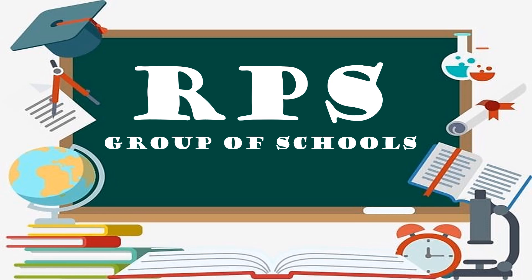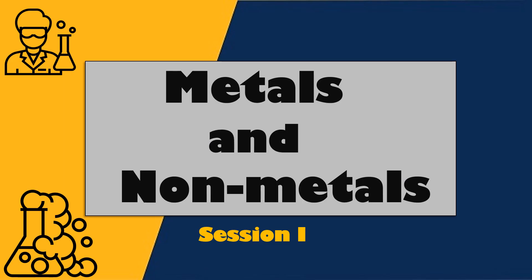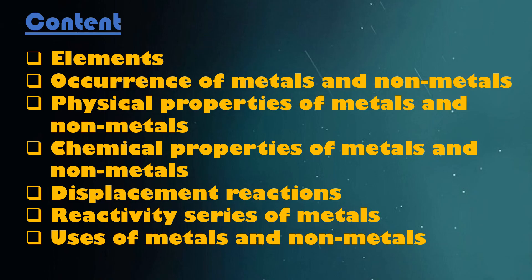Welcome to RPS Group of Schools online classes. Today we will start a new chapter from the chemistry portion of your textbook: Metals and Nonmetals. In this chapter, you will study elements, occurrence of metals and nonmetals, their physical and chemical properties, displacement reaction, reactivity series of metals, and uses of metals and nonmetals.